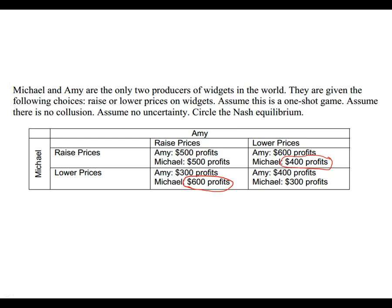Now for Amy: if Michael raises his price, Amy is better off lowering her price. And if Michael lowers his price, it's also better for Amy to lower her price. So Amy does have a dominant strategy — it's to lower her price. But the Nash equilibrium is where Amy lowers and Michael lowers, which is right here. This is the Nash equilibrium in this game.